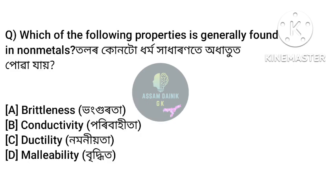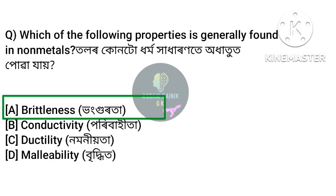Which of the following properties is generally found in non-metals? Answer: Option A, brittleness. Brittleness is a property generally found in non-metals.